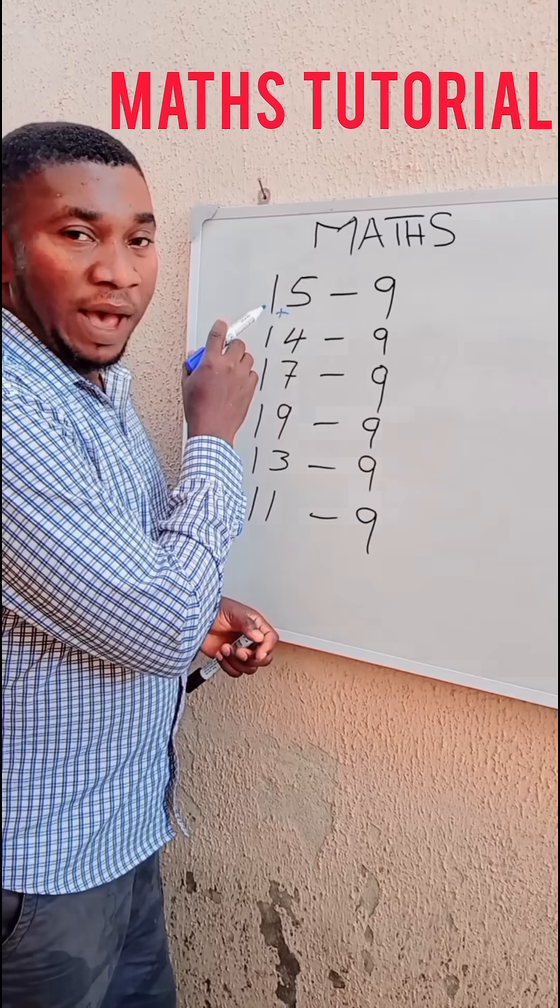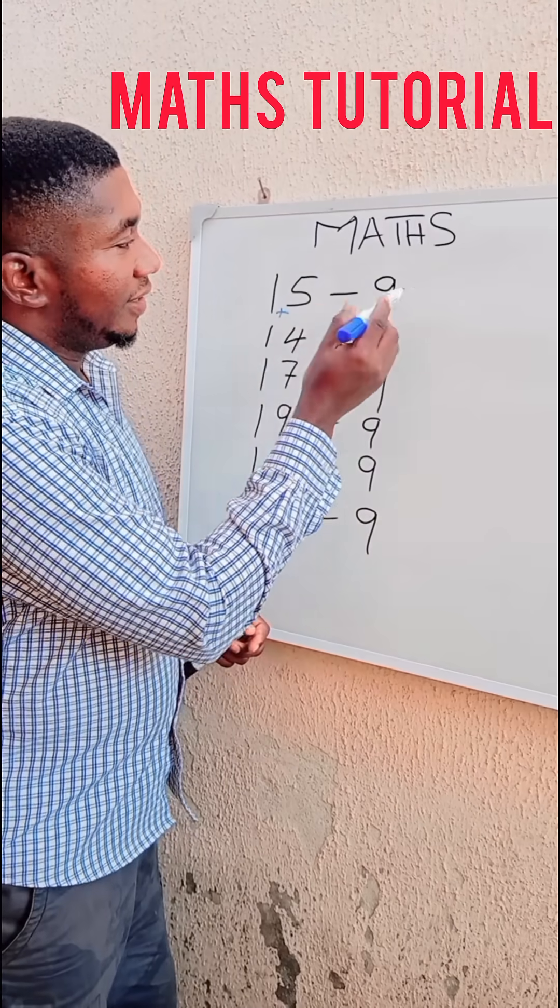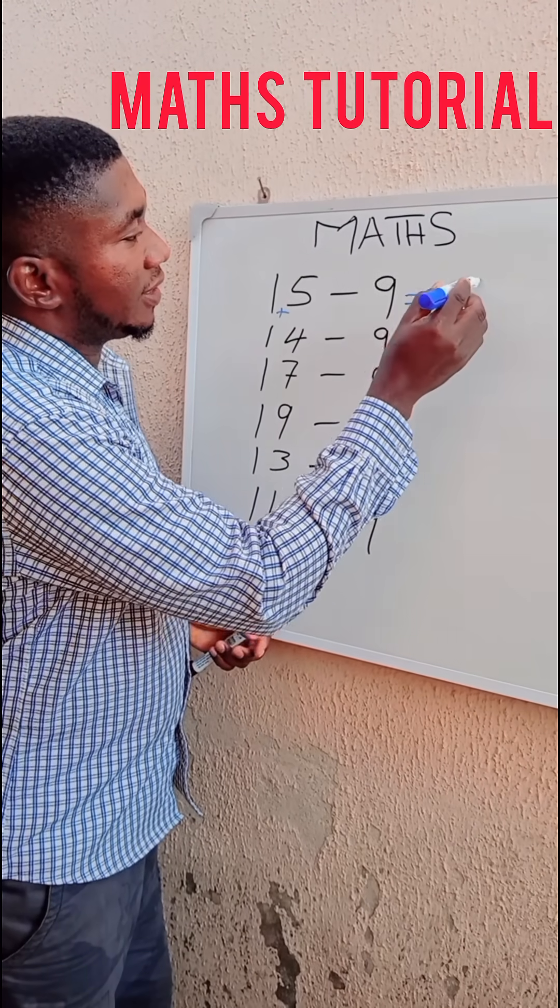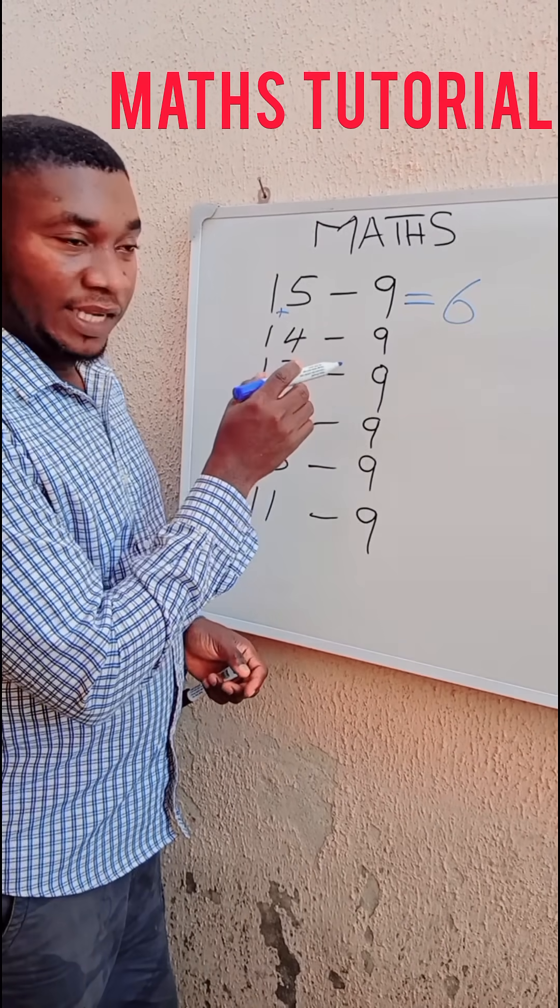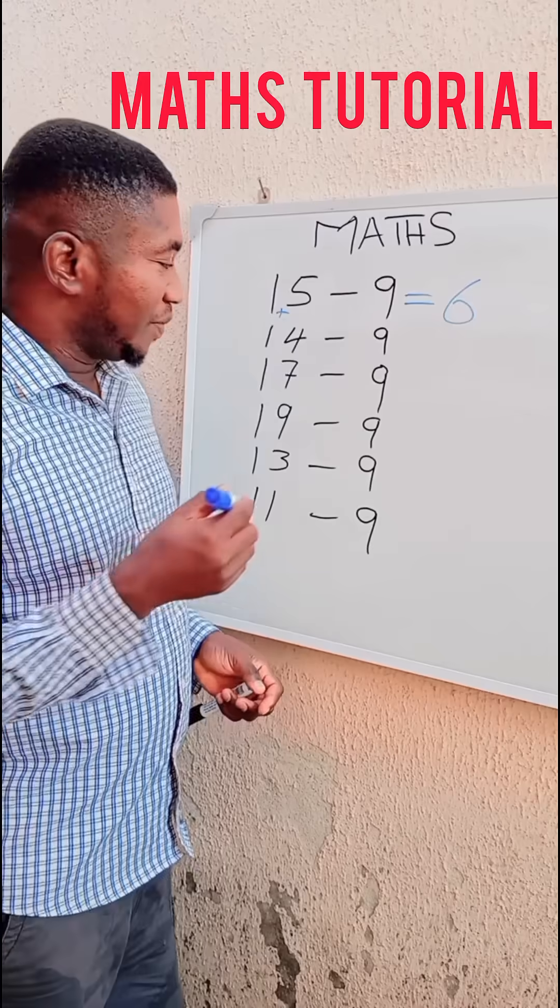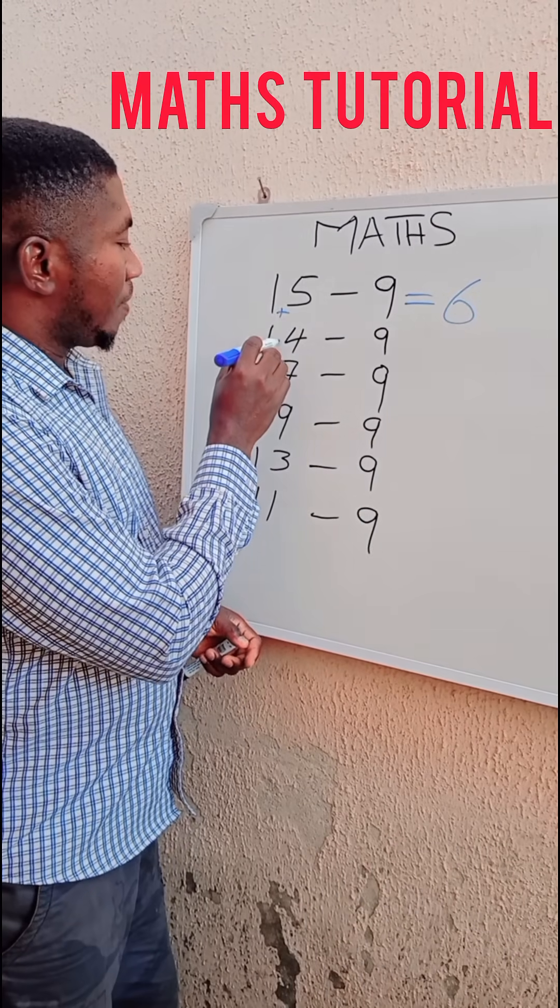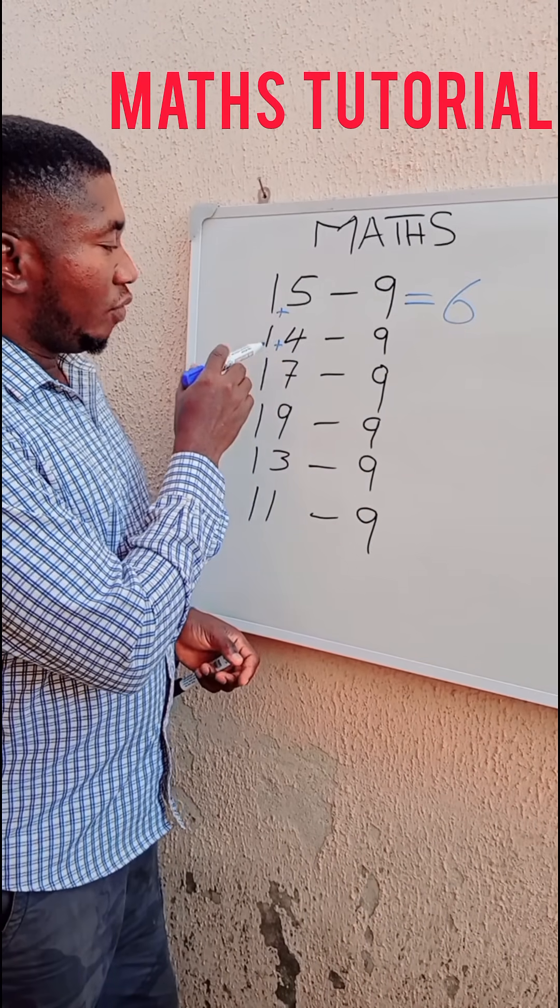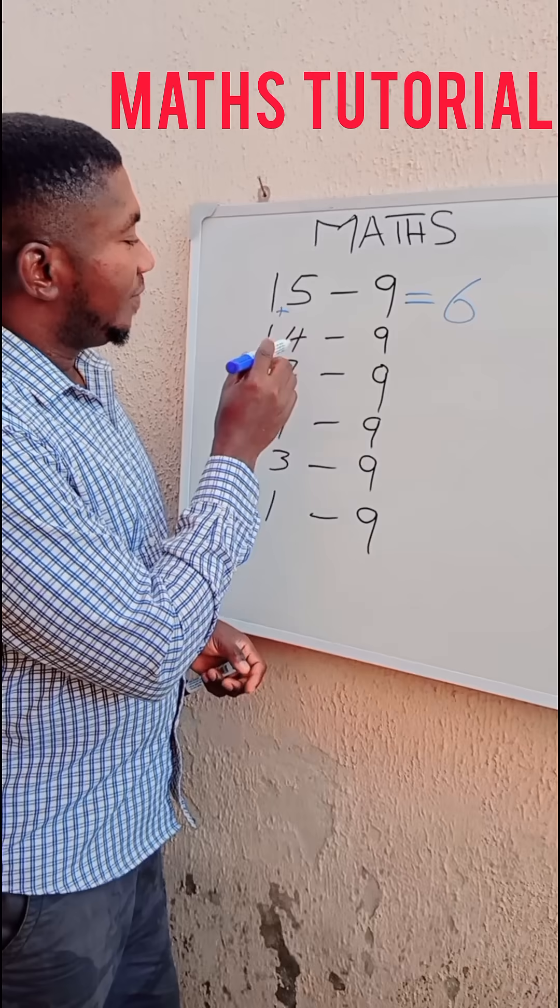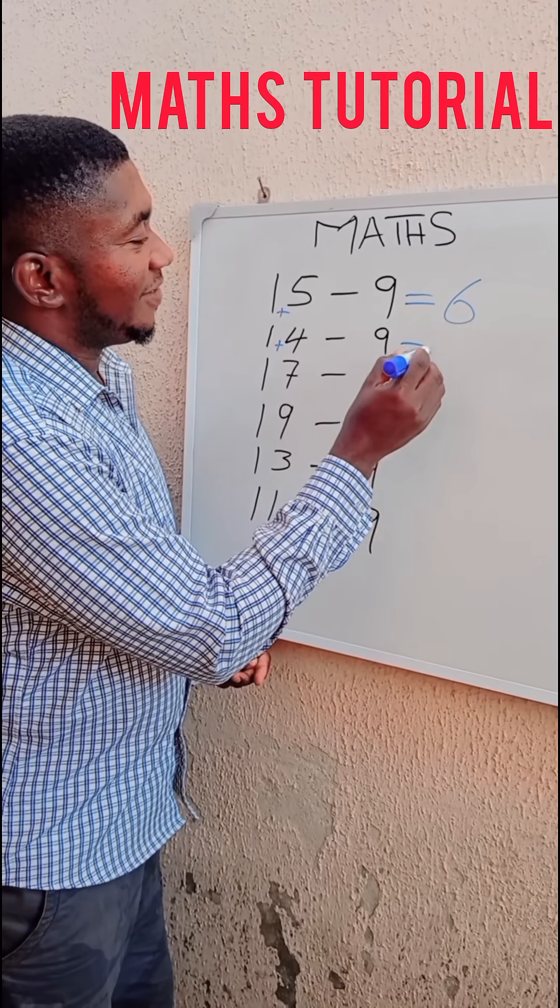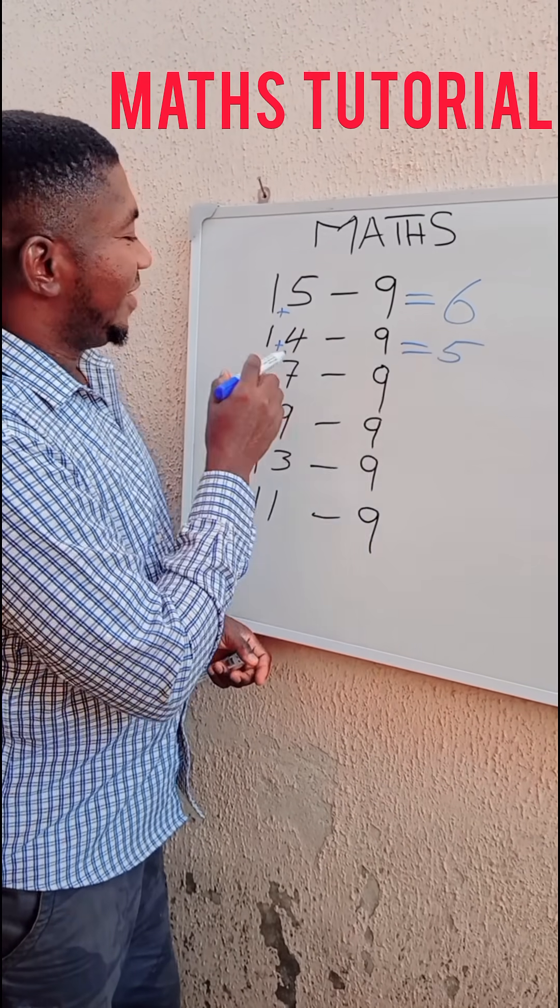1 plus 5 is equal to 6. Then here, 14 minus 9. Instead of you to crack your brain, you just put the plus sign. 1 plus 4, that is 5. That's 14 minus 9, that's 5.